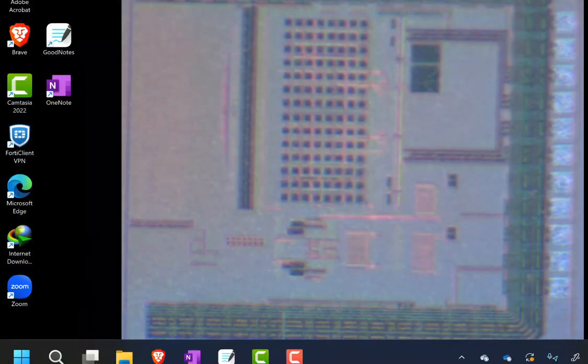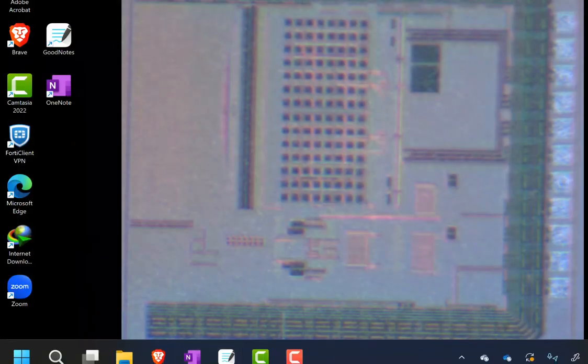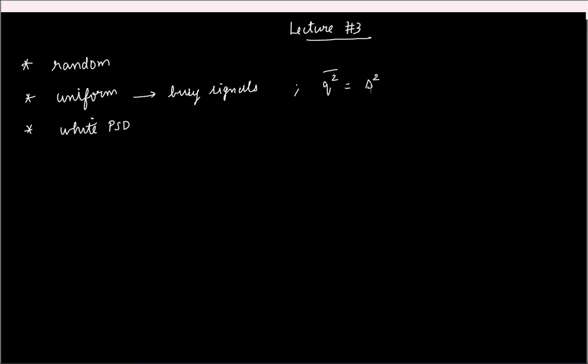The quantization noise power was delta squared by 12. Then for a sinusoidal signal we found out the maximum attainable signal to quantization noise ratio. How much was that in dB? It is 6n plus 1.76, where n is the number of bits to which you are trying to resolve.